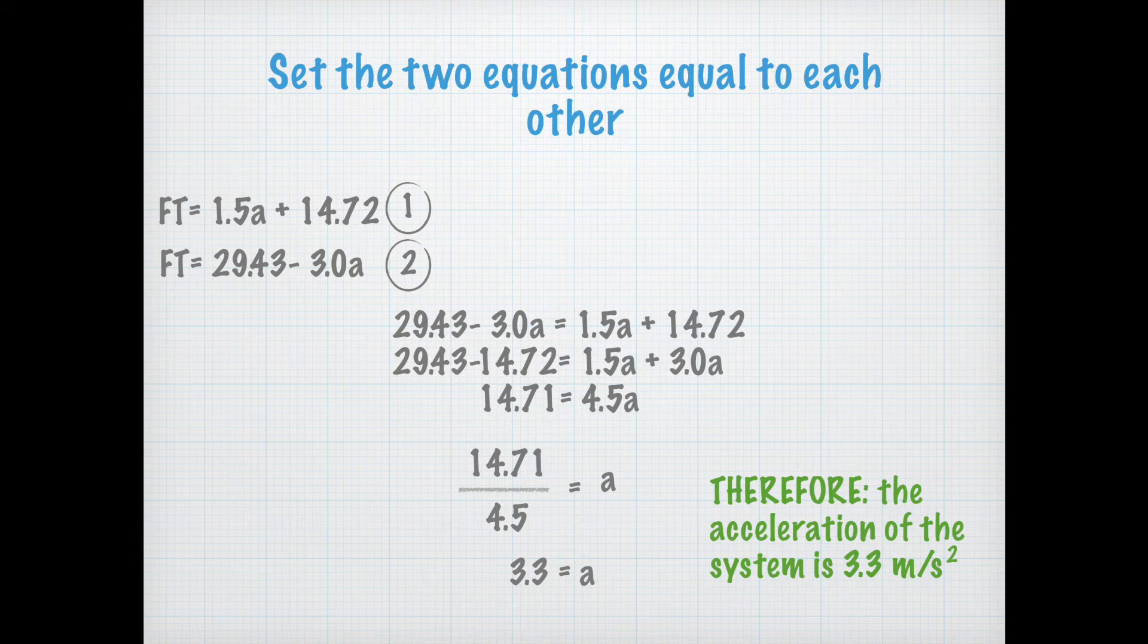So that giving us 29.43 minus 3.0a equals 1.5a plus 14.72. When we rearrange the equation, we get 29.43 minus 14.72 equals 1.5a plus 3.0a. And when we start to solve, we get 14.71 equals 4.5a.